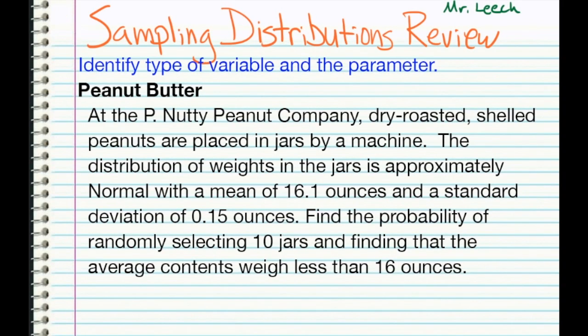Our next question is about peanut butter. At the P. Nutty Peanut Butter Company, dry-roasted shelled peanuts are placed in jars by a machine. The distribution of weights in the jars is approximately normal with a mean of 16.1 ounces and a standard deviation of 0.15 ounces. Find the probability of randomly selecting 10 jars and finding that the average contents weigh less than 16 ounces. Again, what type of variable is this? Is this categorical or quantitative? And what's the parameter? Make sure to include its symbol.